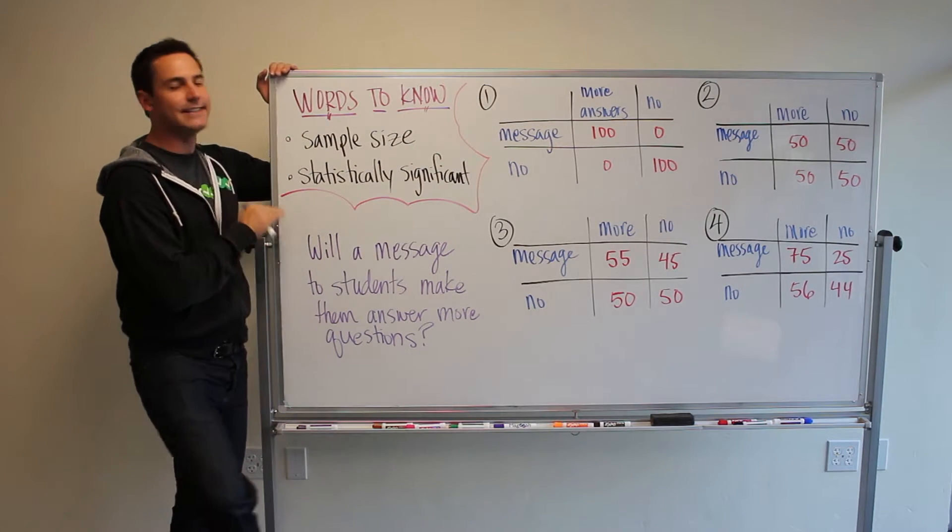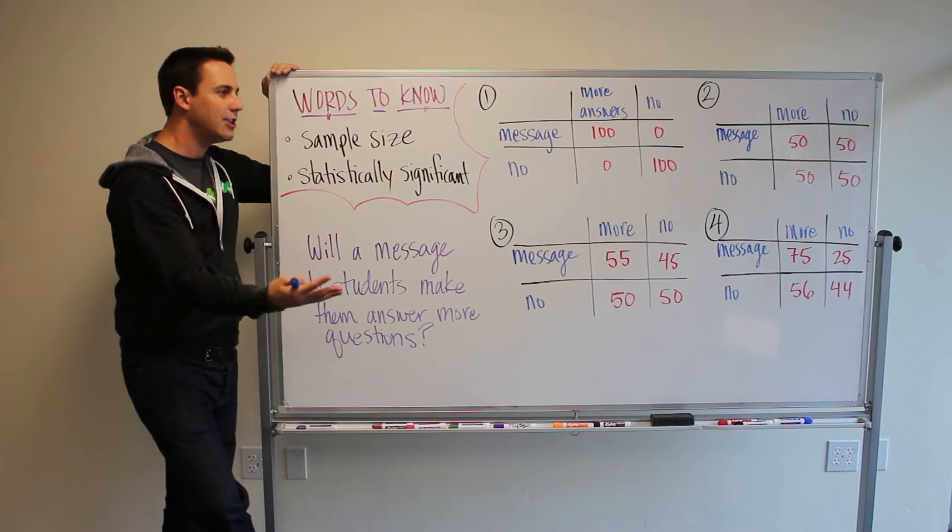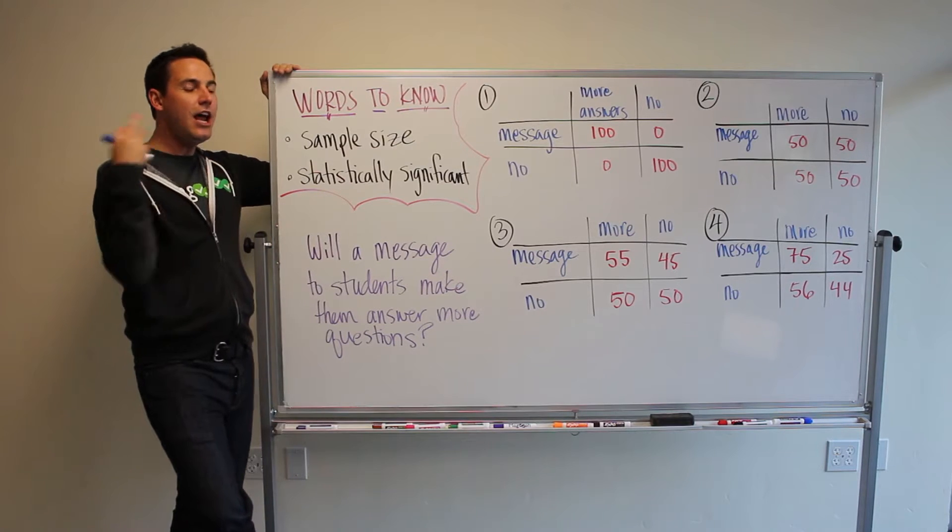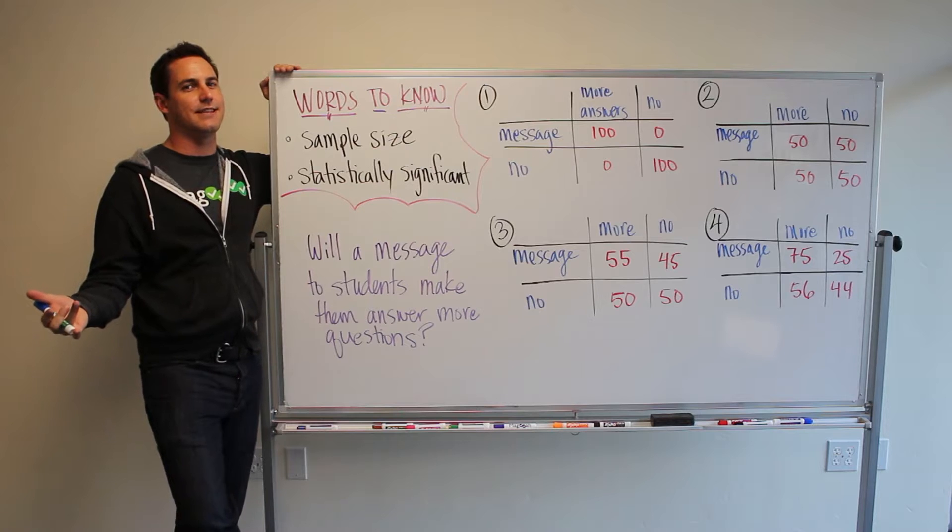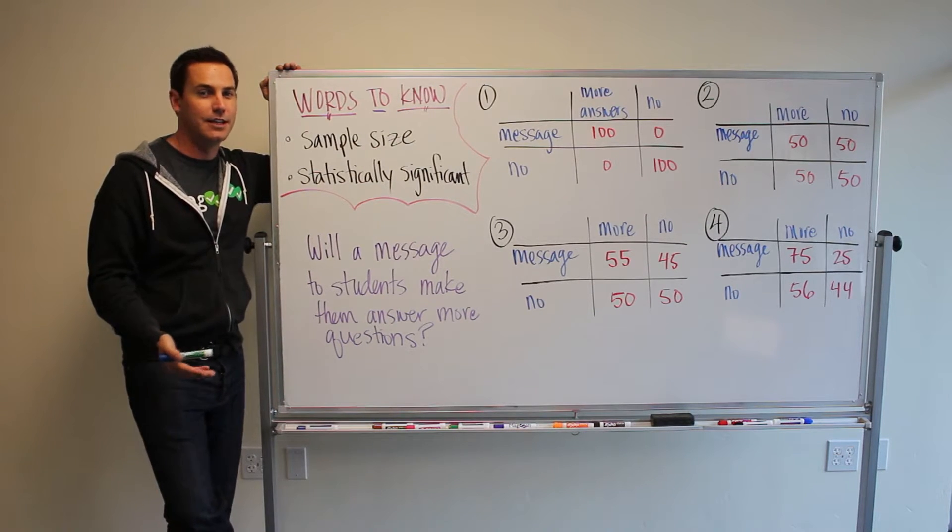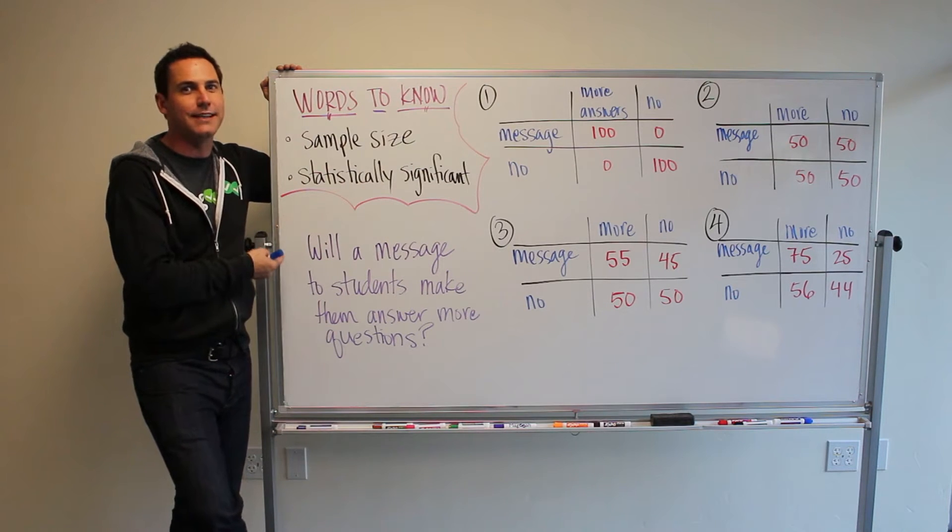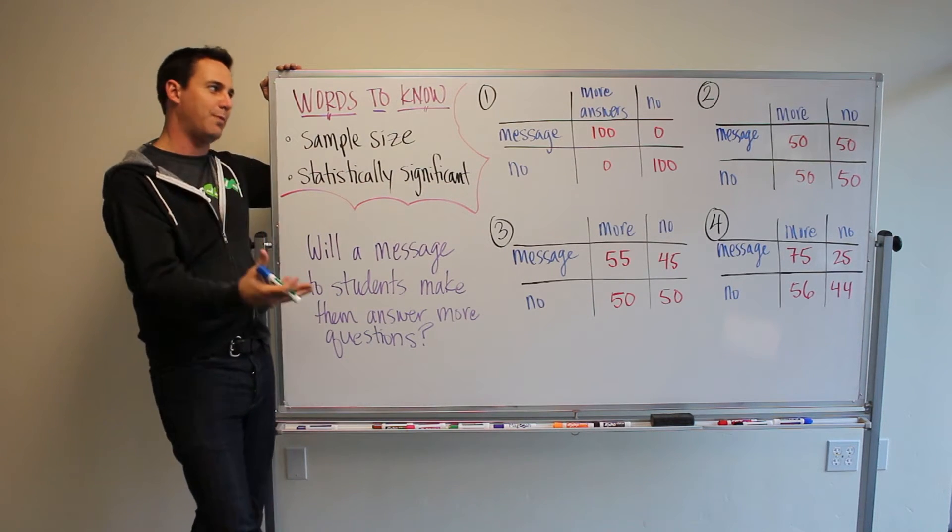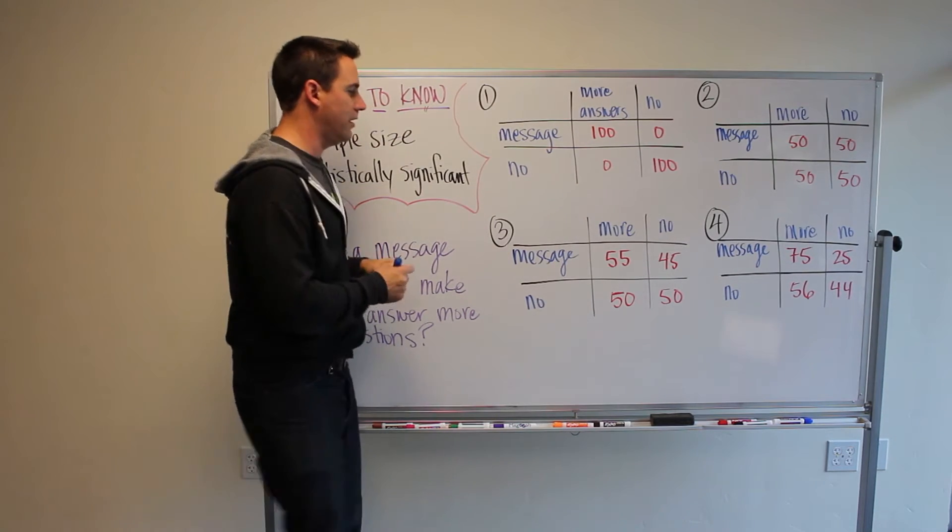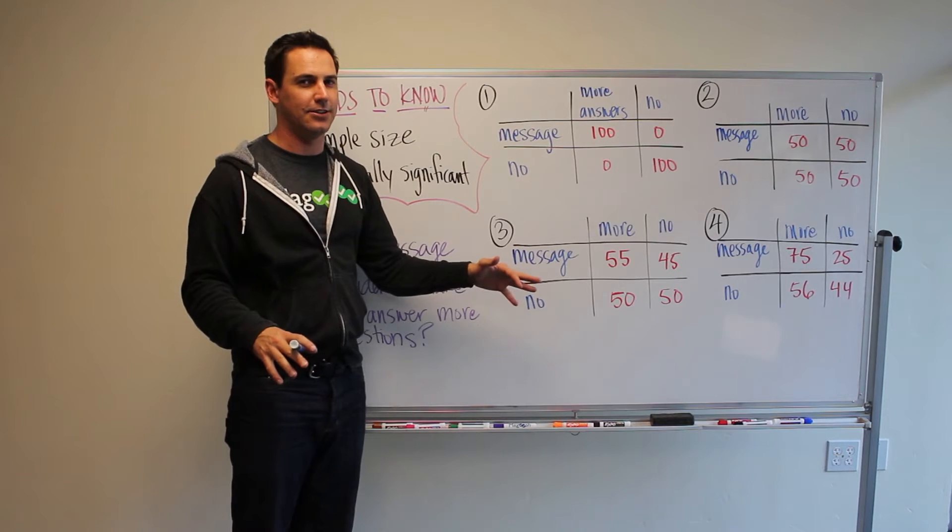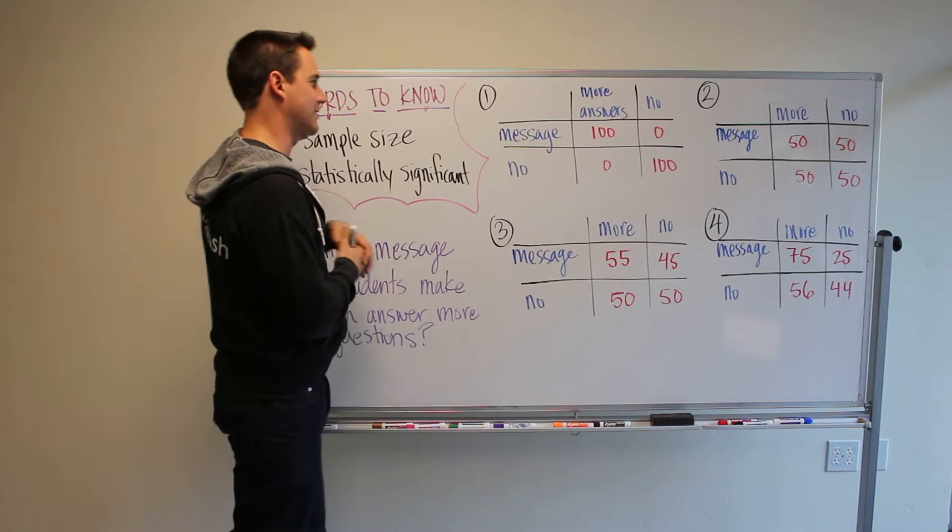So statistically significant means that when you look at your results, there's enough evidence to prove that it wasn't by chance that something changed or something went up. So it's the probability that something didn't happen by chance. And so that's why you have a group of people who you don't send the message to. So this is a drastic, I should say, a very drastic simplification of this process just to illustrate these words.